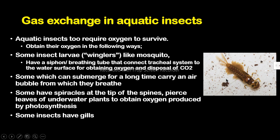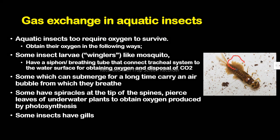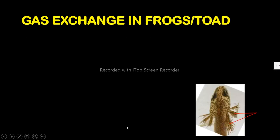Finally, some aquatic insects have external gills, like the insect shown here, which extract oxygen directly from the water. This insect can live in water as long as it wants. If it does not have spiracles, it cannot move onto land and is strictly aquatic, because an organism that breathes through gills cannot survive on land. That is how gas exchange in insects works.